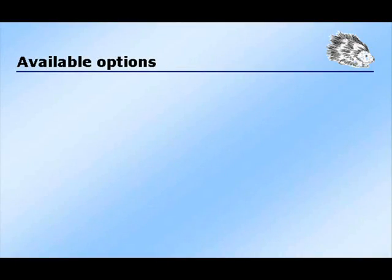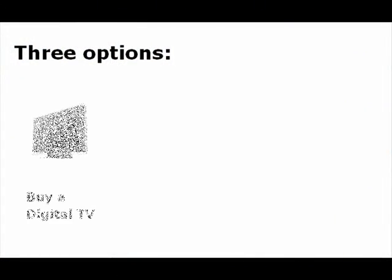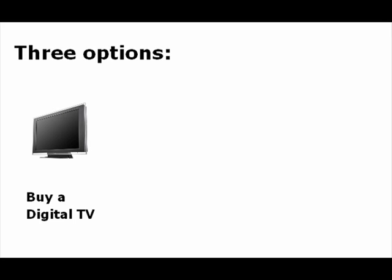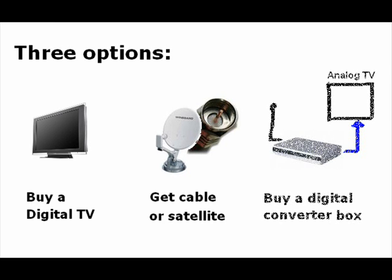Now what do I do? If my analog TV can't receive anything, what options do I have? Basically, there are three options. The first is to buy a digital TV — this is the simplest solution but also the most expensive. The second option is to sign up for cable or satellite TV. The third option is to buy a digital converter box. The rest of this video will discuss this third option.